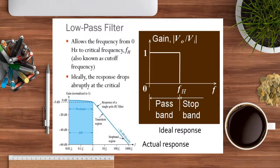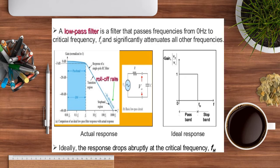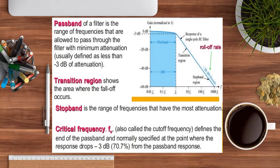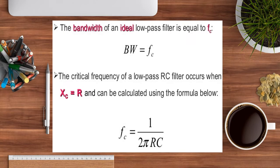There are four types of filters: low pass, high pass, band pass, and band stop. For low pass filters, frequencies from zero hertz to a particular cutoff are passed; the gain is expressed as V_out over V_in. The gain versus frequency graph shows the ideal and practical cases, including the pass band, transition region, stop band, critical frequency, and the single-pole RC response curve.